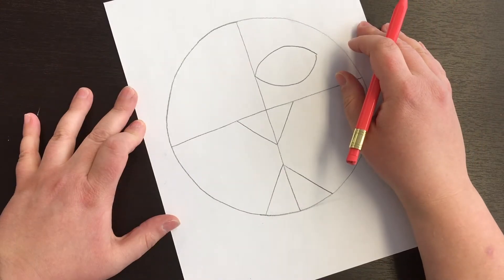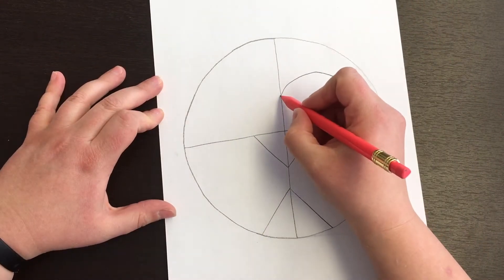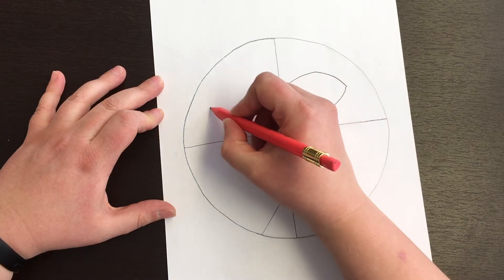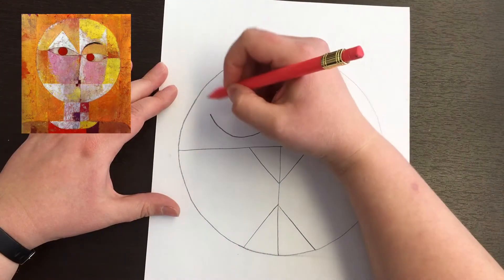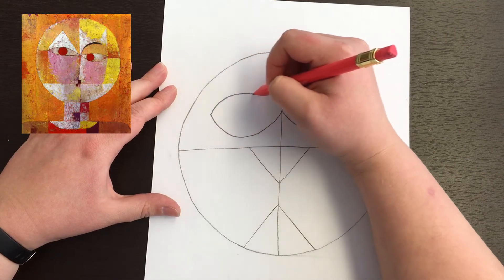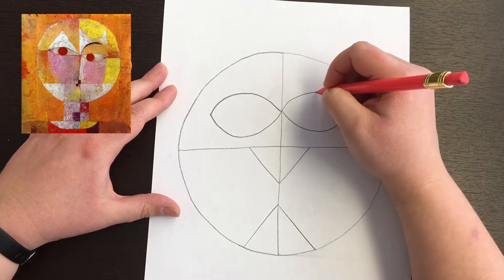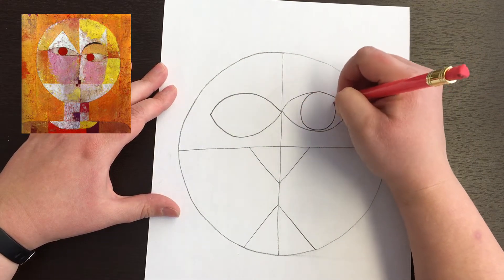If you want it to be tilted, you can kind of tip your paper a little bit. I think I'm just gonna go straight, and they kind of connect in the middle, just like they do on Mr. Klee's senecio painting. And then a big old circle in the middle for the eye.